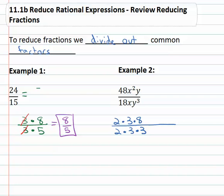As for the variables, the x squared can be written out as x and x, and then the y. In the denominator, x, y cubed is three y's multiplied together.